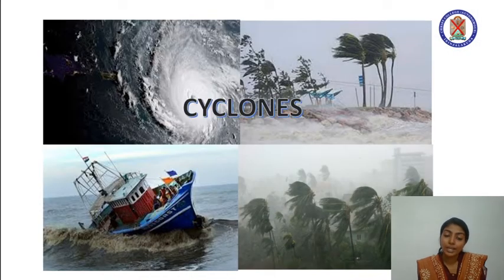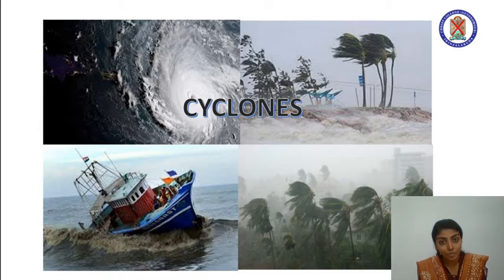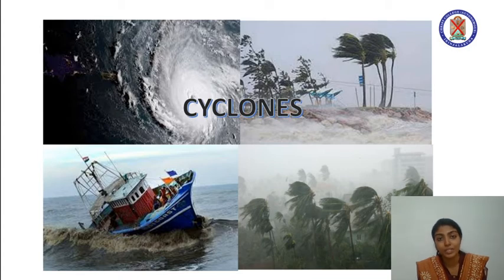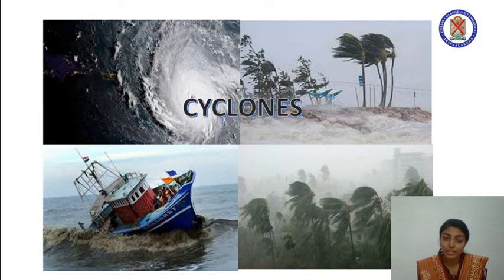Coming to the next topic, cyclones. Tropical cyclones form over warm tropical oceans where the sea surface temperature is at least 26 degrees Celsius, and their normal lifespan extends from 4 to 5 days. The long-term average annual frequency of cyclones in the Indian Ocean, which consists of the Bay of Bengal and Arabian Sea, is around 5.6, and the frequency of cyclones in the Bay of Bengal is almost 4 times greater than that of the Arabian Sea.